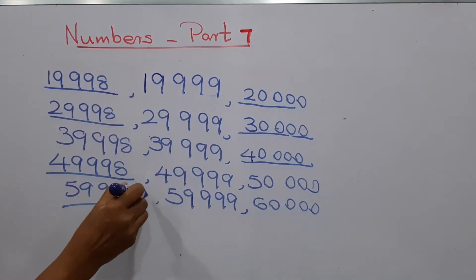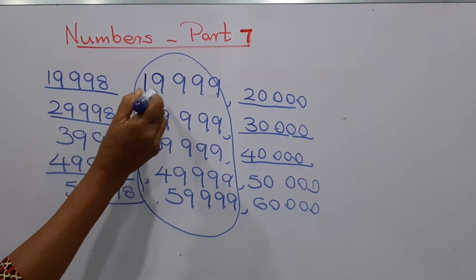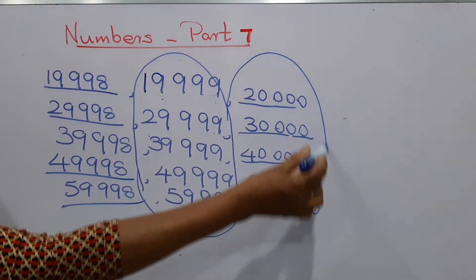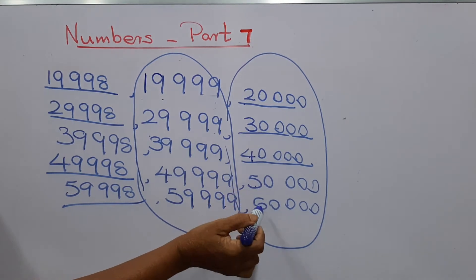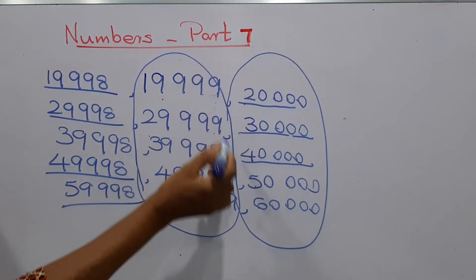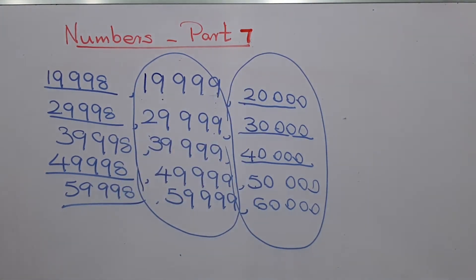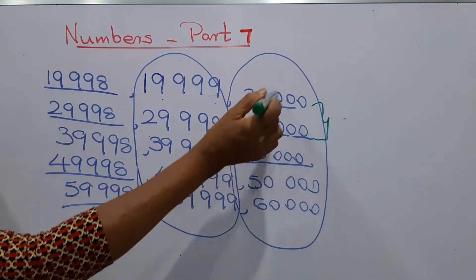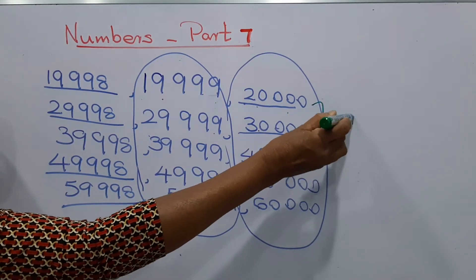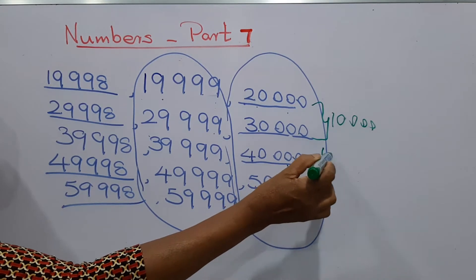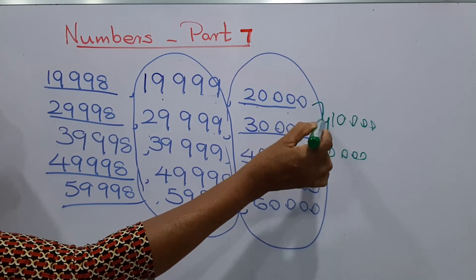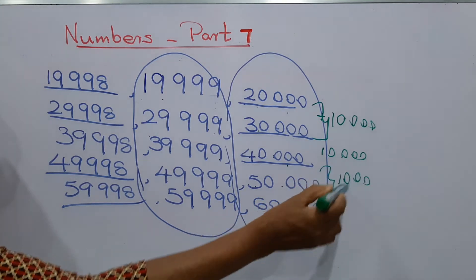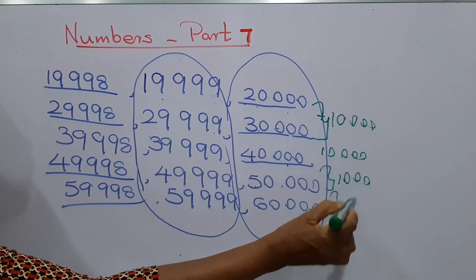Now, did you notice a pattern here? 19,999, and here also there's a pattern: 20,000, 30,000, 40,000, 50,000, 60,000. What is the pattern? You have to understand the common difference between these numbers. From 20,000 to 30,000, the common difference is 10,000. From 30,000 to 40,000, that is also 10,000. From 40,000 to 50,000, common difference is 10,000.